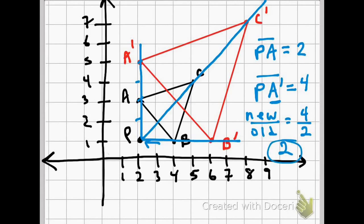Now you'll notice PB and PB prime also have the same relationship. PB is two, and PB prime is four.